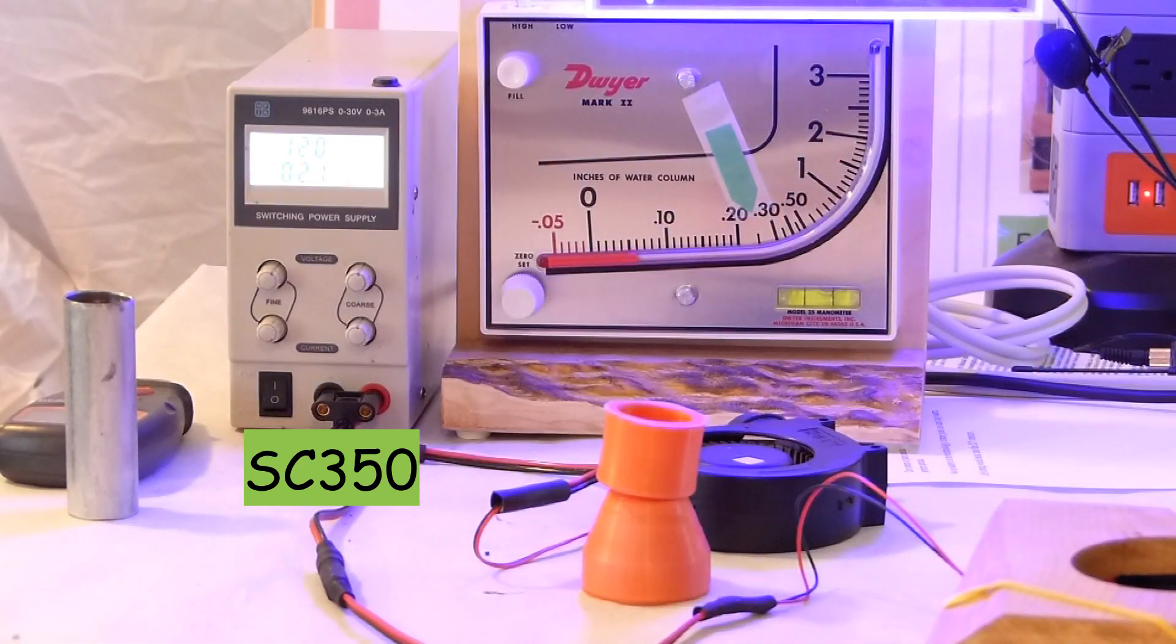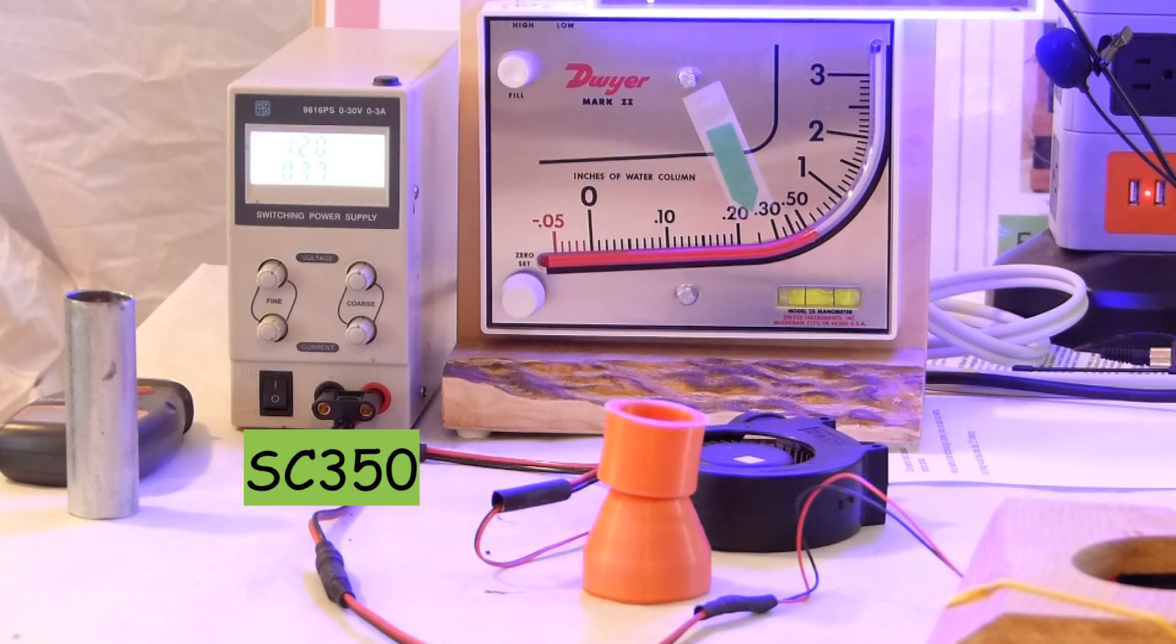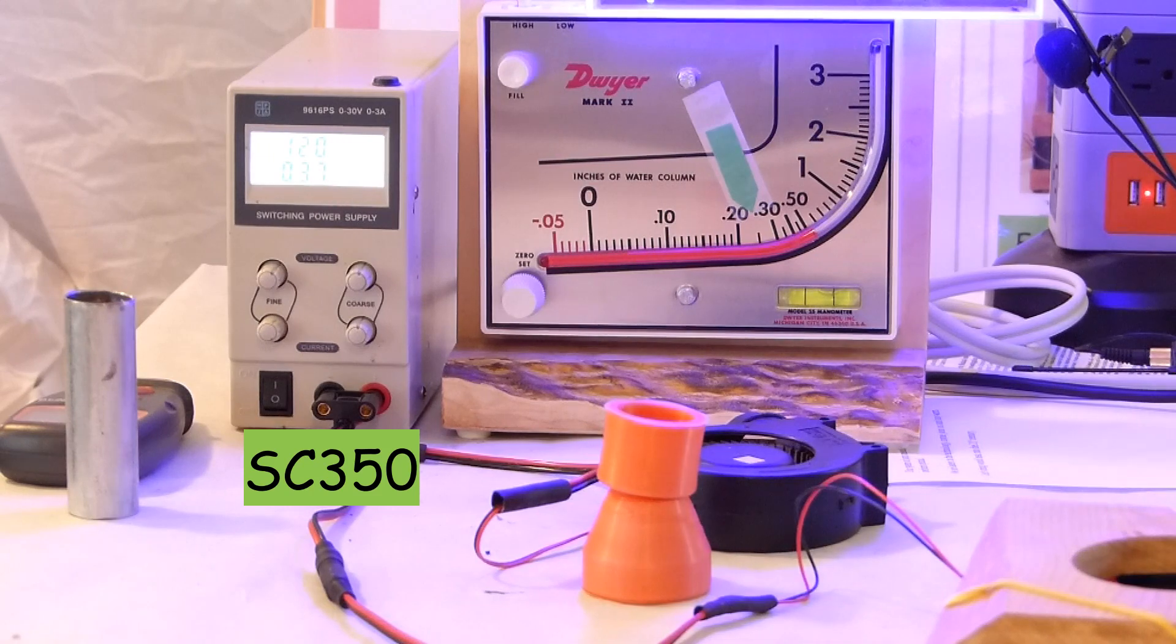The next two are fans we made the smokeless chimney, the SC350 for its 290 mA and about one half inch of water column. We found that you have to get over the 0.25 number with the ping pong ball and that's our minimum standard.